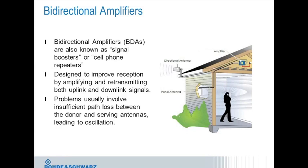Bidirectional amplifiers (BDAs) — also called signal boosters or cell phone repeaters — are another very common source of interference in cellular networks including LTE. Designed to improve reception by amplifying and retransmitting both uplink and downlink signals, they can be installed by network operators or subscribers (self-installs). To function properly without causing interference, there must be sufficient path loss between the donor antenna (pointed at the base station) and the serving antenna (inside the served area), typically achieved by sufficient antenna separation and using a highly directional donor antenna.